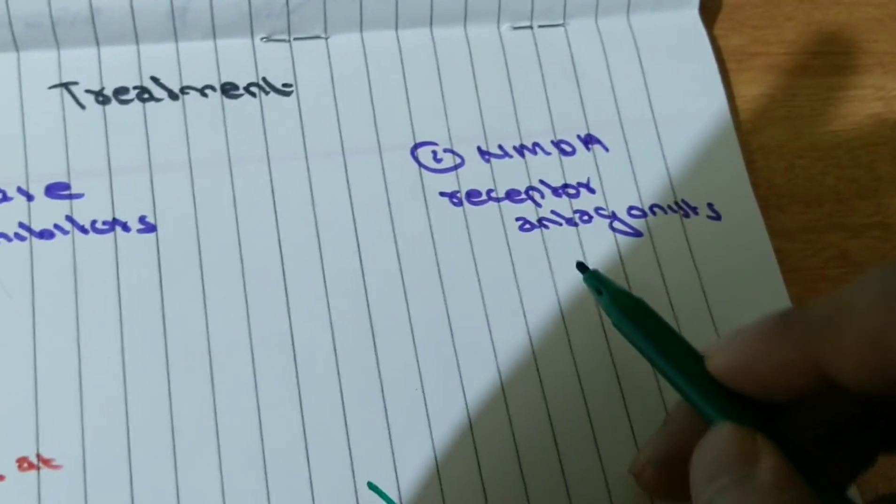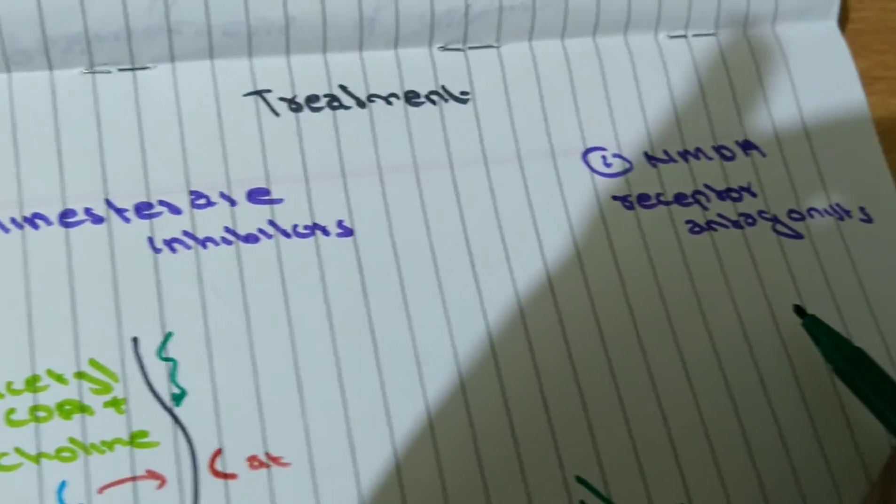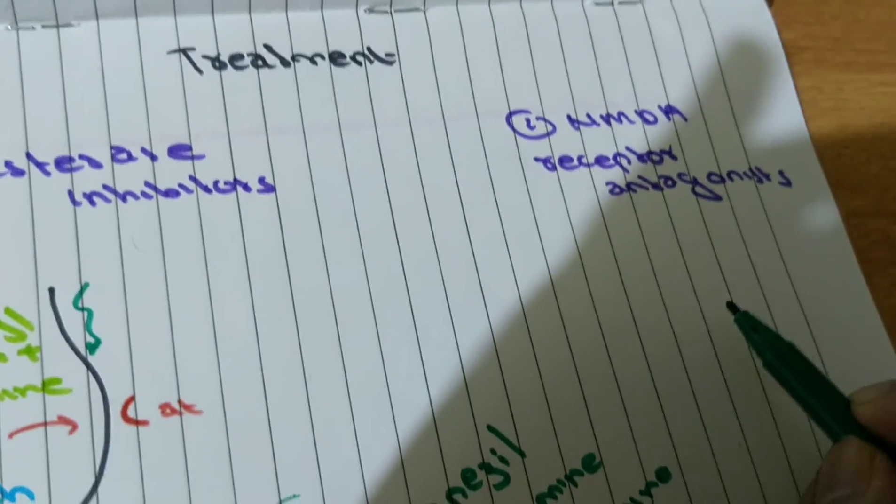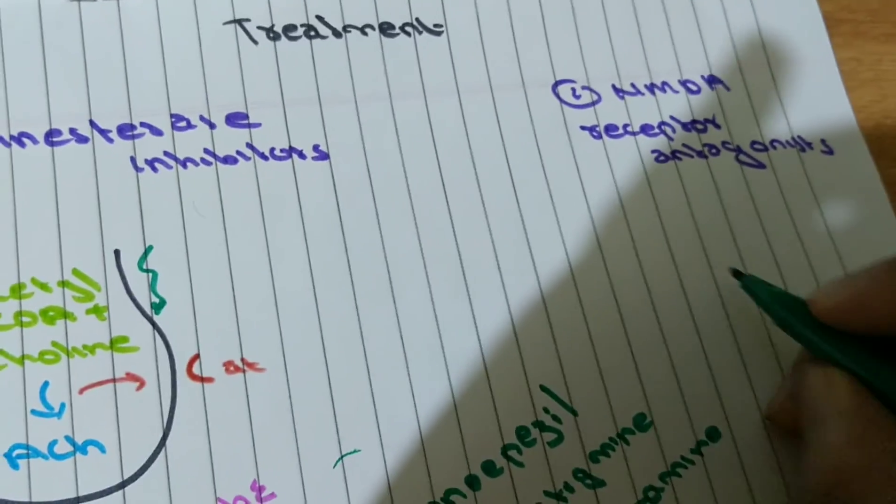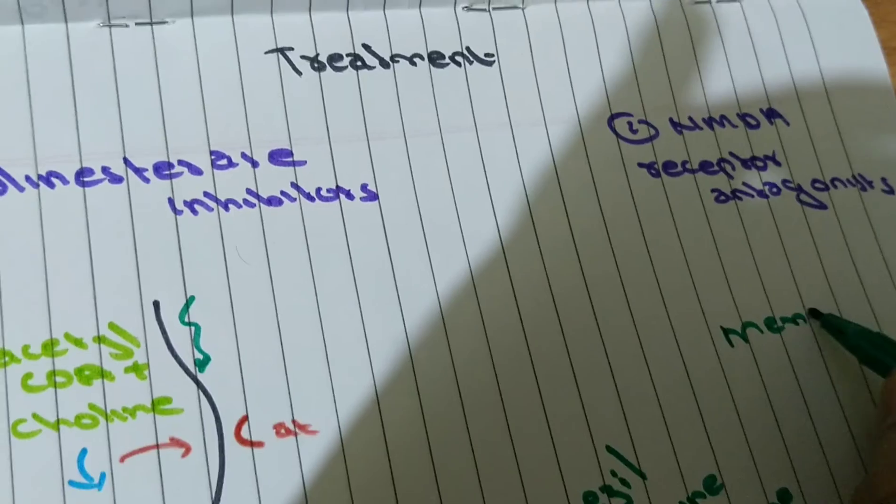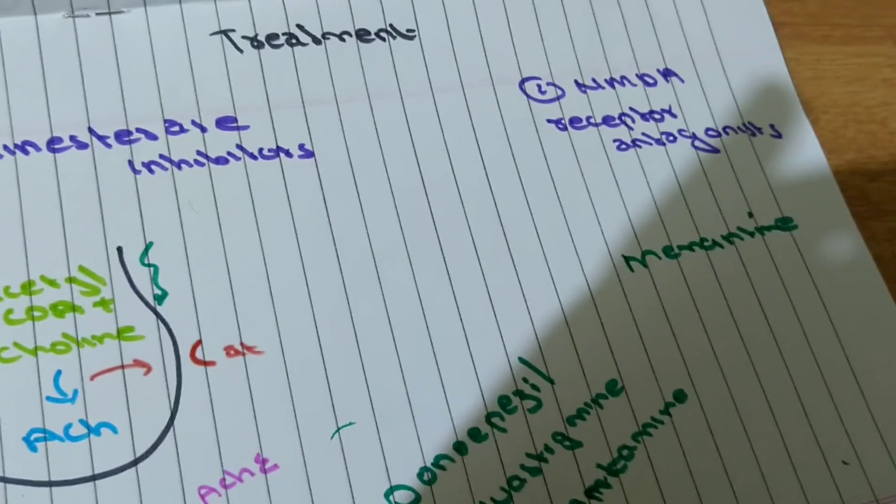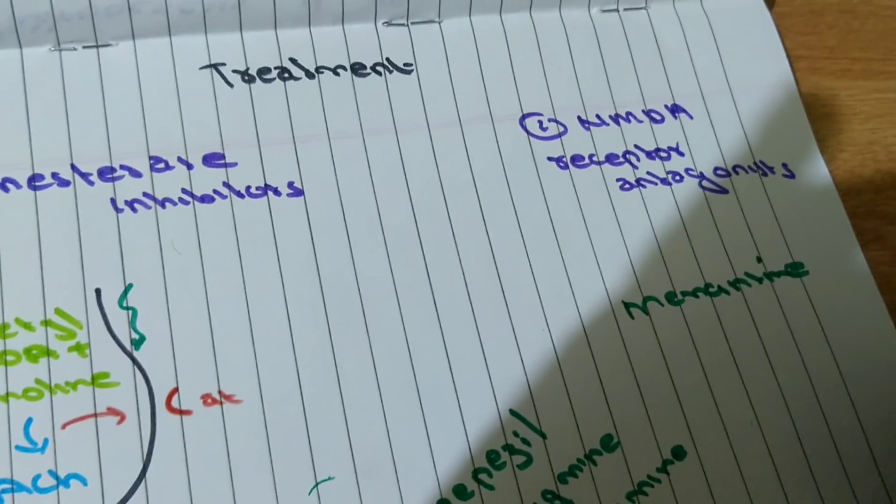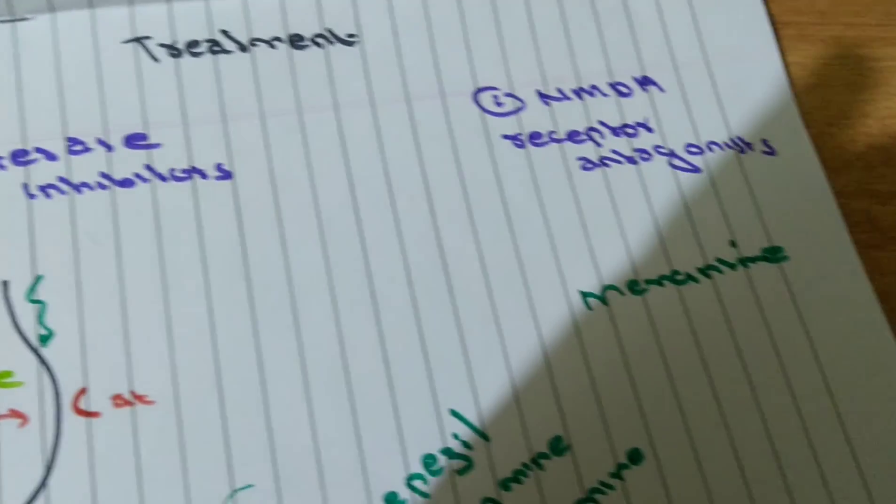And we have NMDA receptor antagonists. NMDA receptors are actually ionotropic glutamate receptors. We use drugs such as Memantine which reduce calcium influx into the neuron and are useful against the treatment of Alzheimer's.